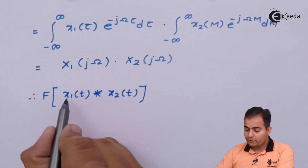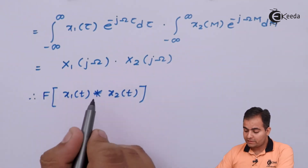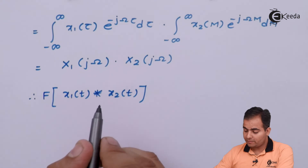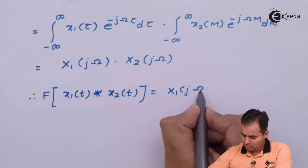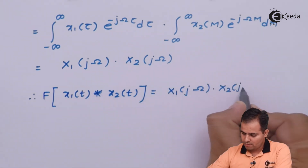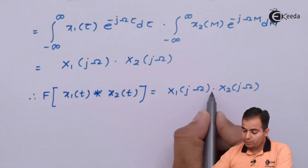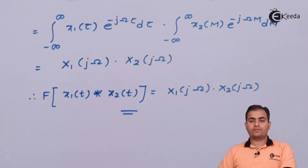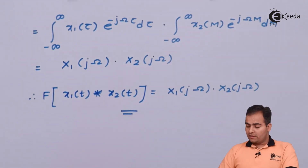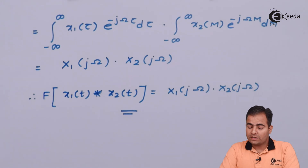So the Fourier transform of x1(t) convolved with x2(t) — that is the convolution theorem result — is X1(jω) multiplied by X2(jω), and this is the proof. This is how we prove the convolution theorem.